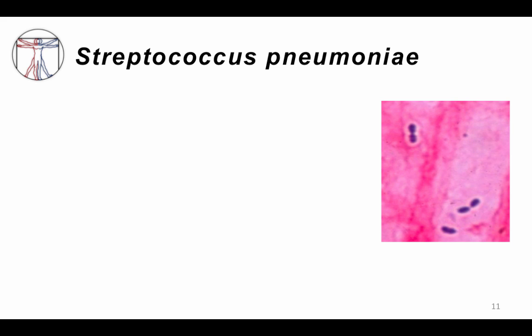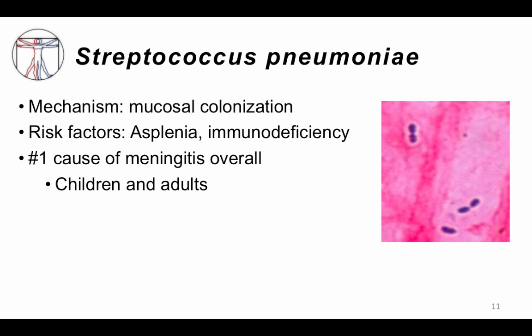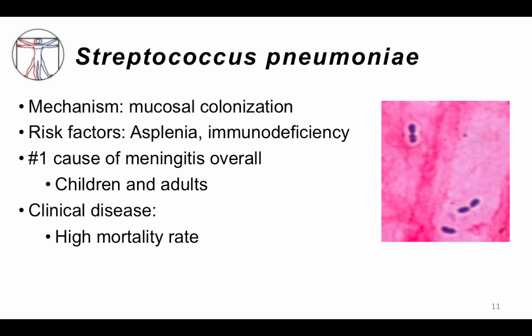Streptococcus pneumoniae is one of the most common, and overall the most common, cause of meningitis. It causes mucosal colonization, then gets into the bloodstream and makes its way to the cerebral spinal fluid. Risk factors include asplenia and other immunodeficiencies. It remains the number one overall cause of bacterial meningitis and continues to have a very high mortality rate — approximately 20% — despite everything we have learned.